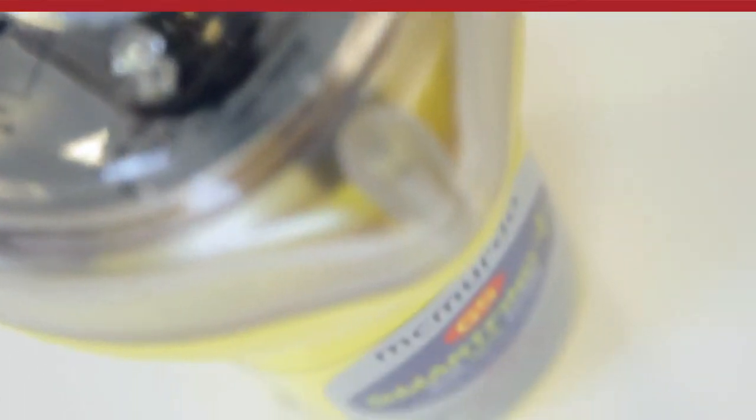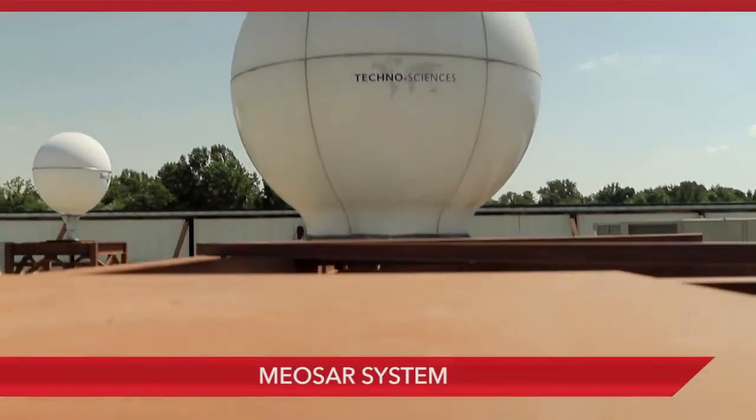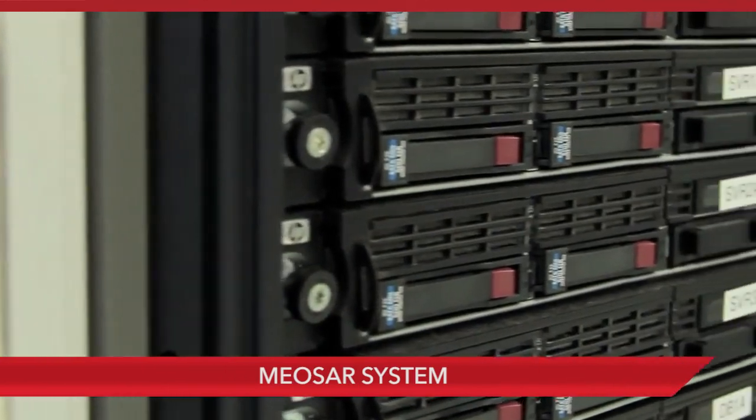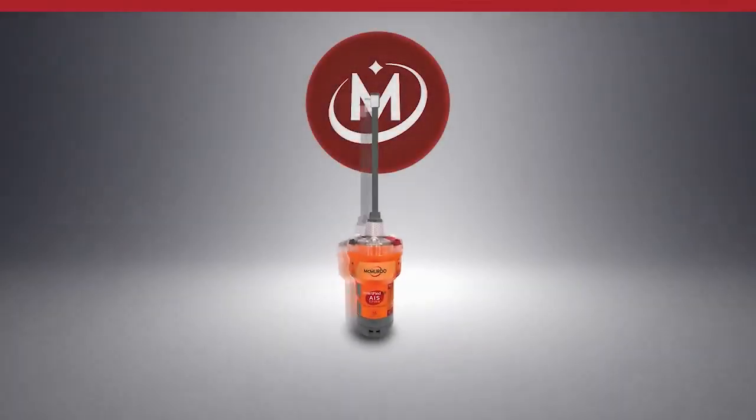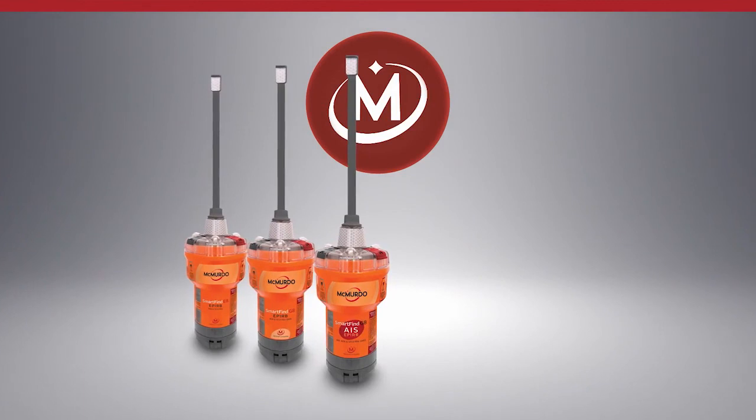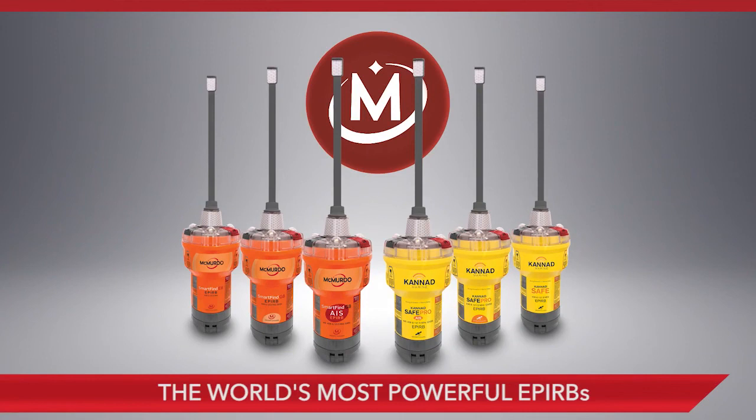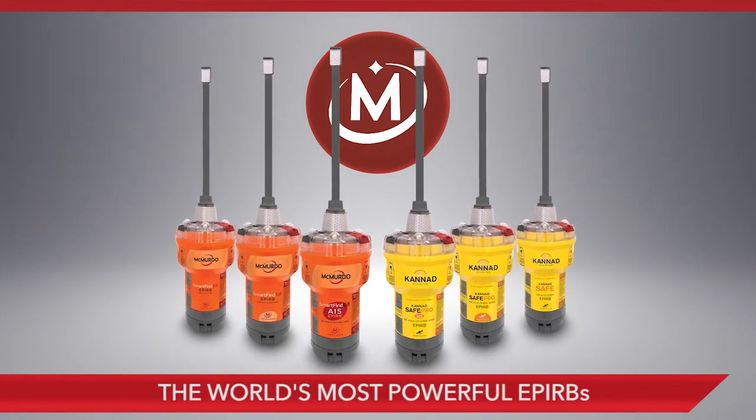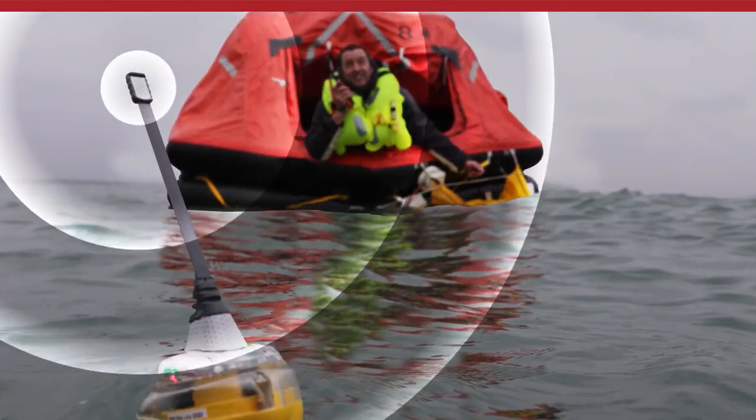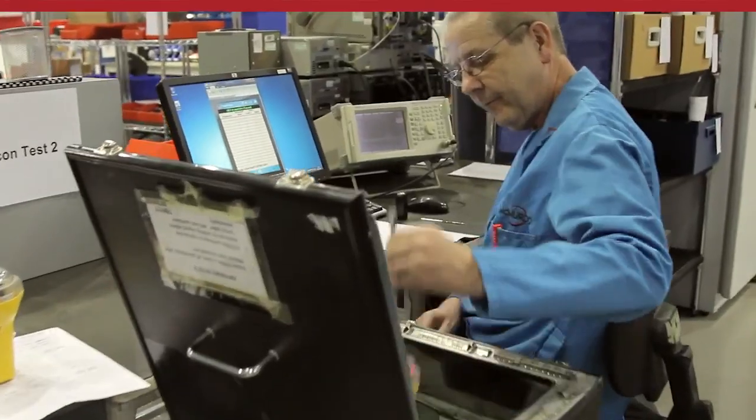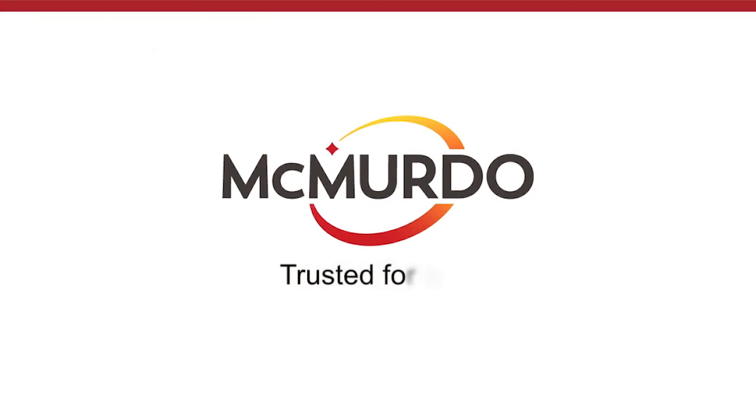The newest EPIRBs by the only beacon manufacturer who is pioneering the search and rescue ecosystem with next generation technology, MIASAR. The new McMurdo SmartFind G8 AIS and Canad SafePro AIS family of products. The world's most powerful EPIRBs to accelerate the search and rescue process through faster detection, superior accuracy and greater reliability. Only McMurdo can be trusted to bring this innovation to the industry. Only McMurdo is trusted for life.